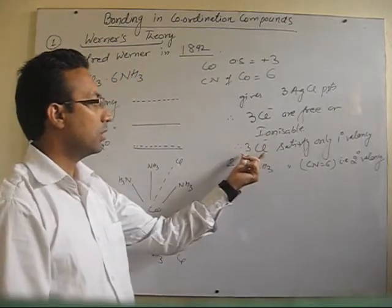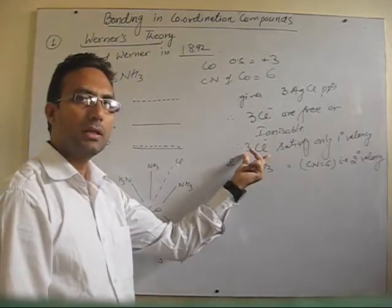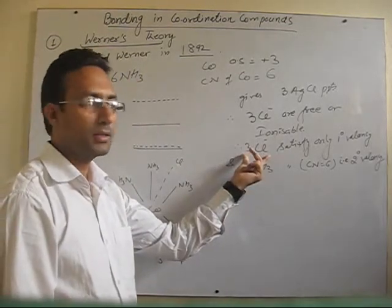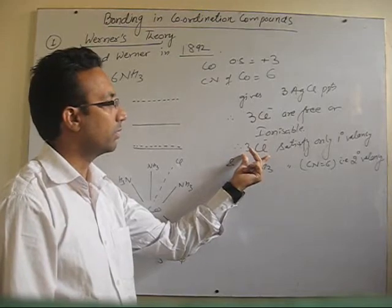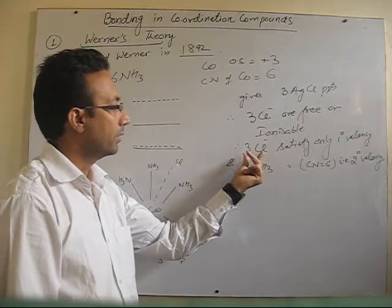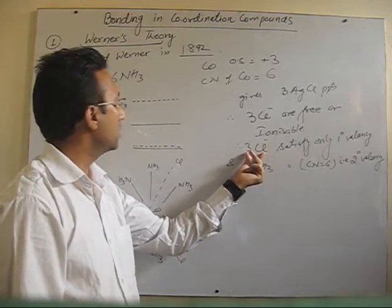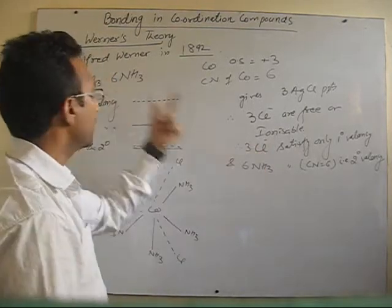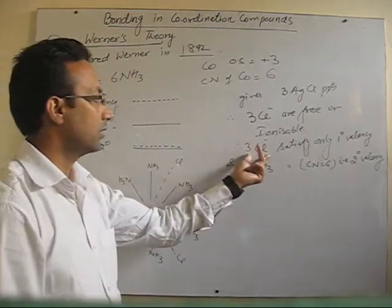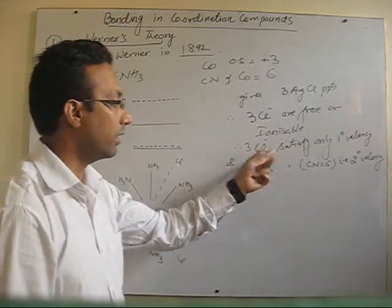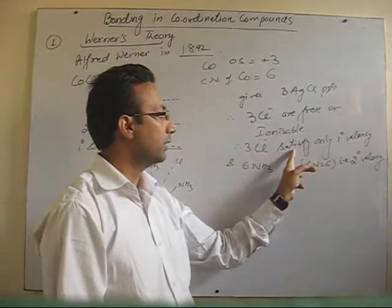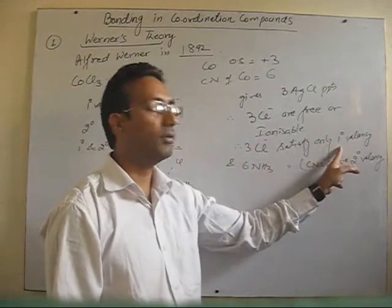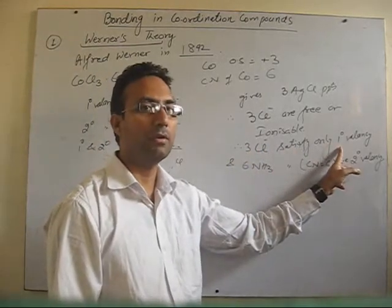We can conclude here, as only primary valency is ionizable according to Werner, therefore all the 3 Cl present in this complex — all the 3 chloride ions — they satisfy only primary valency.